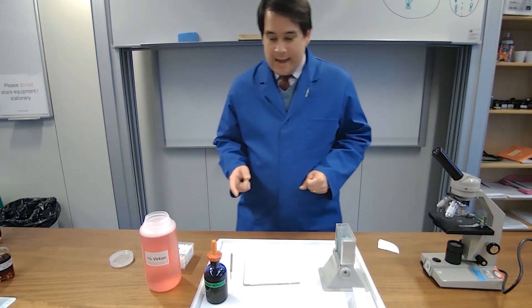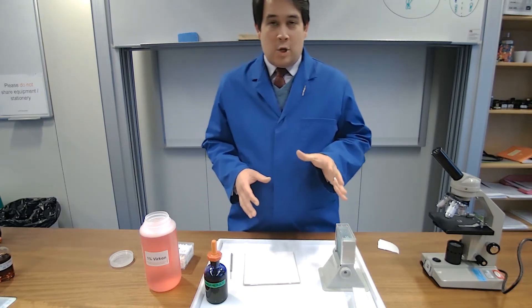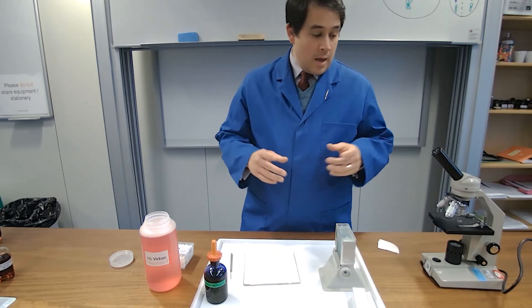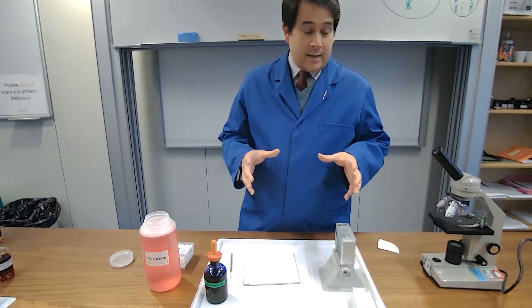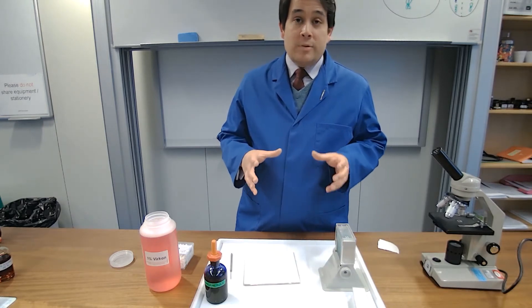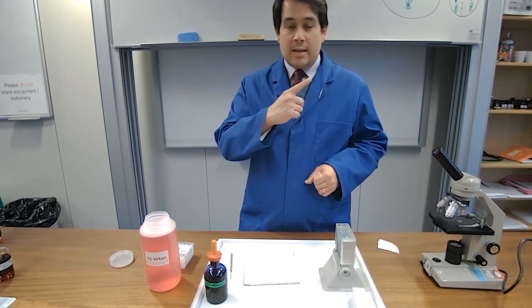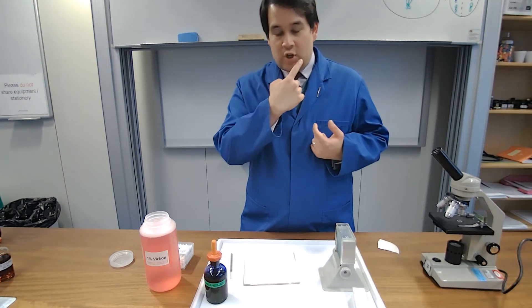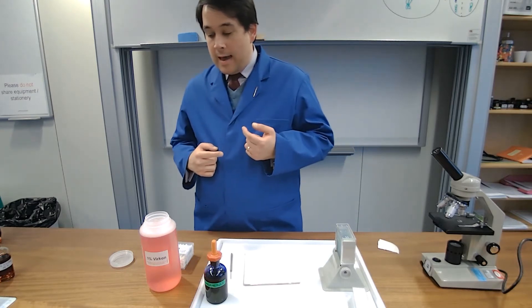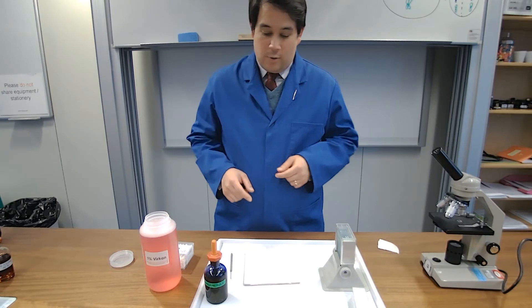Hi, today we're looking at a required practical for AQA GCSE Biology, which is basically the preparation of microscope slides to observe animal cells, which in this case is the human cheek epithelial cells, and plant cells, which is the onion cells, which we'll look at in due course.